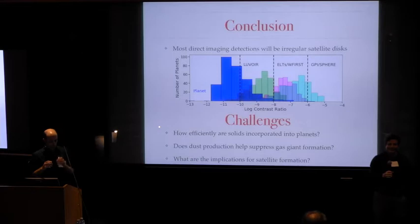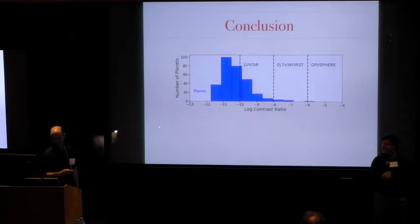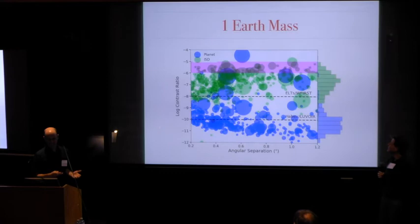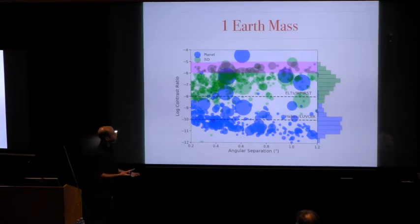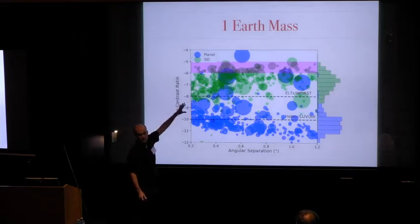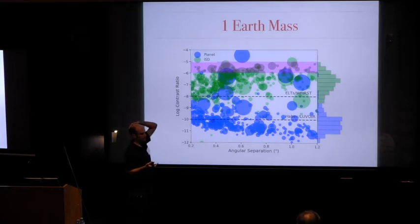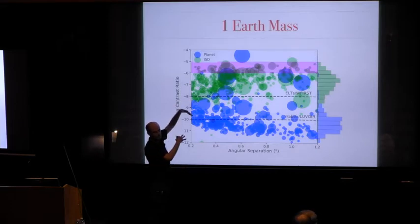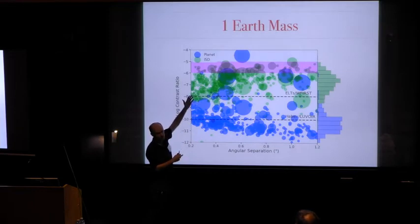Question: Can we use the fact that GPI and SPHERE haven't detected anything of this sort today to rule out this one earth mass scenario? Yeah, the answer is no, but good question. That was the first thing that we checked. Maybe the one thing that I've gone through quickly is that the contrast ratio that you get really depends on your target sample. The GPI target sample really focuses on A stars because that's where these giant planets have been found. But it depends really strongly on that stellar mass. If you look around A stars, you're not going to find many irregular satellite disks. So this is a sample that's optimized for finding irregular satellite disks. We've taken the actual GPI sample, put irregular satellite disks at one earth mass around all of them, and you don't find any with GPI.